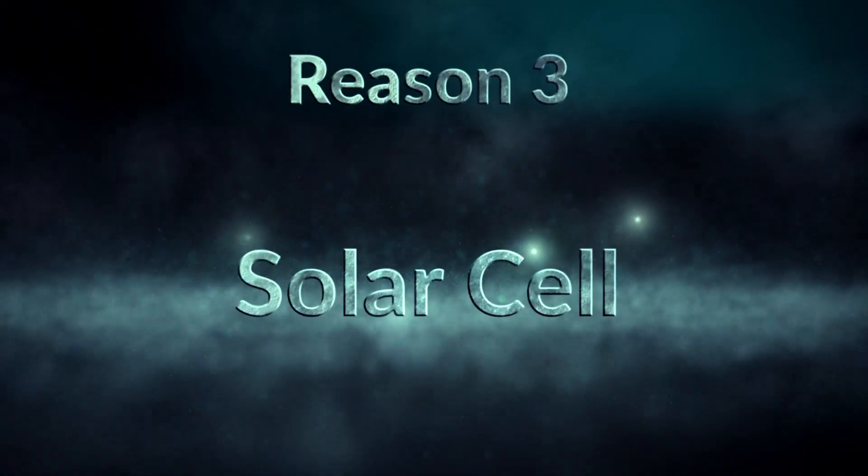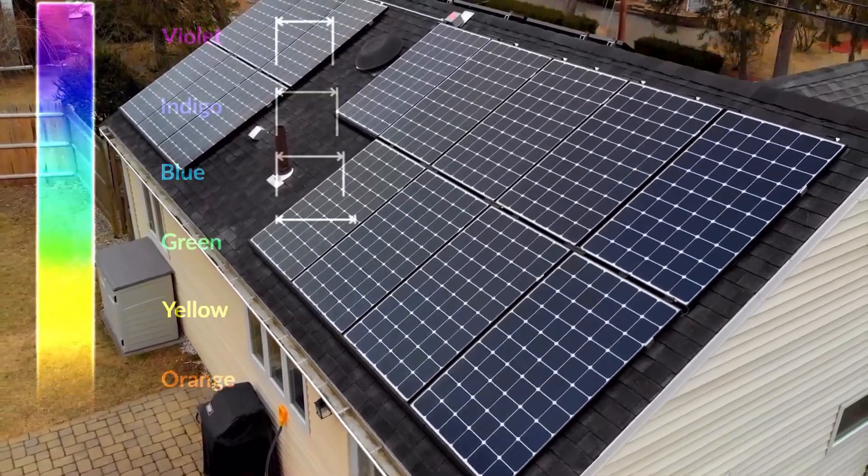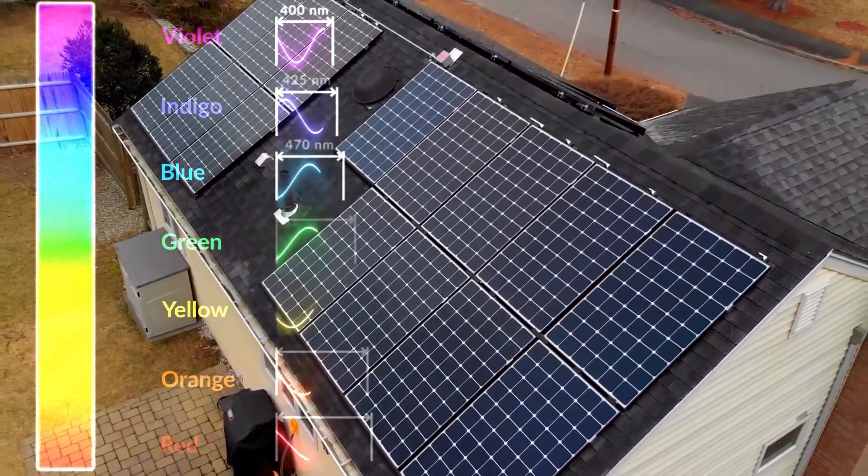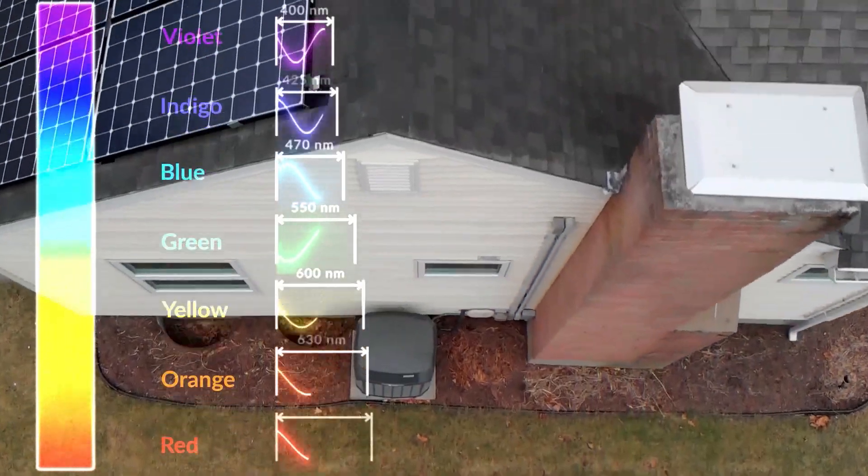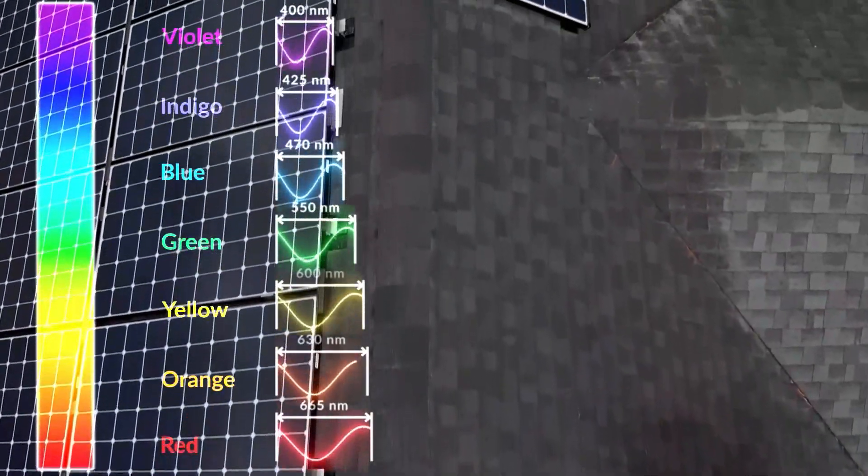Reason 3: Solar Cell. As you know, in solar cells among the visible light spectra, the rate of absorption and production of electrical energy for red light is higher than the blue.